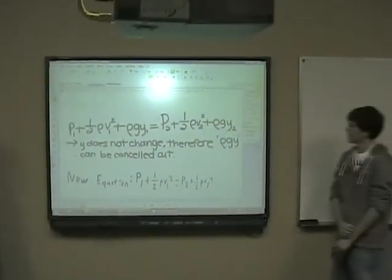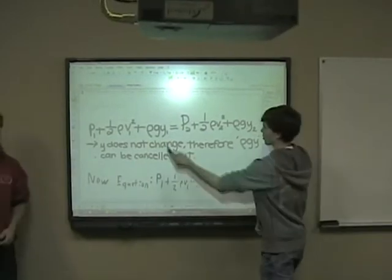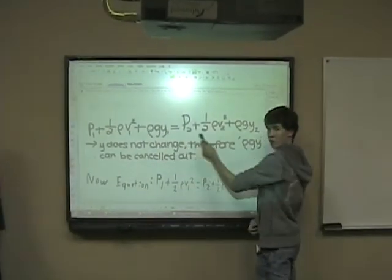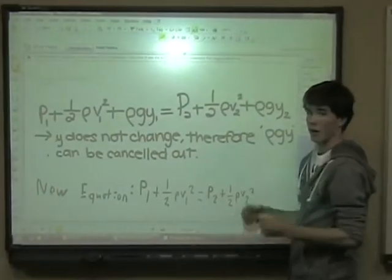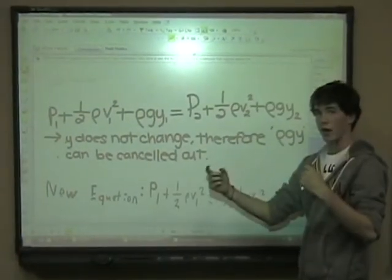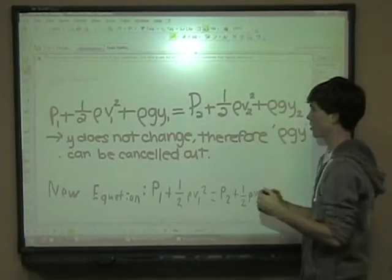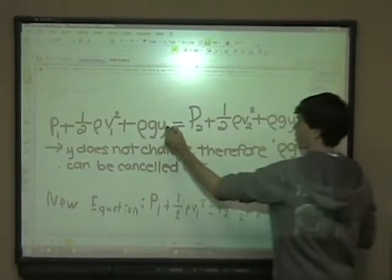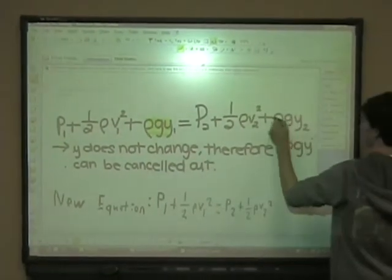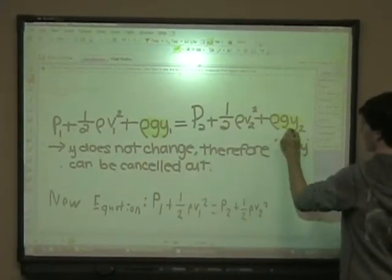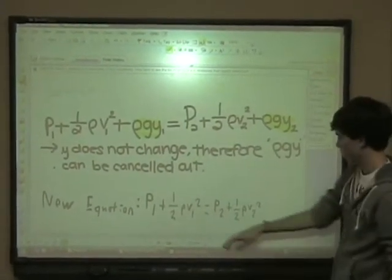So, the equation here is Bernoulli's principle. Because the height of the different areas on the outside and the inside does not change, we can neglect this part of the equation and this part of the equation, leaving us with a new equation.